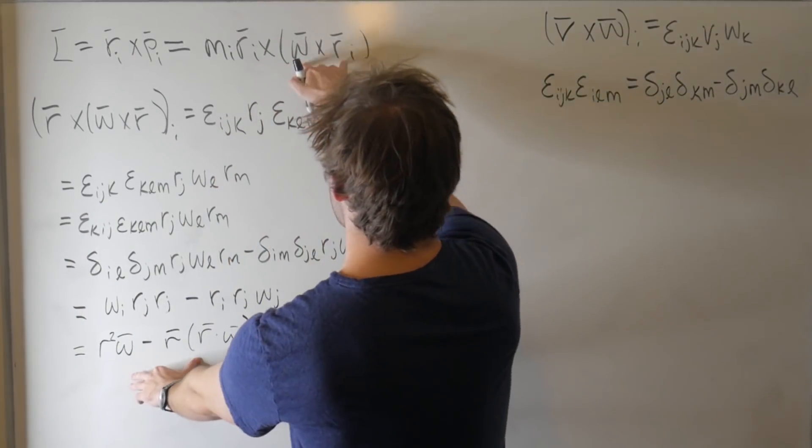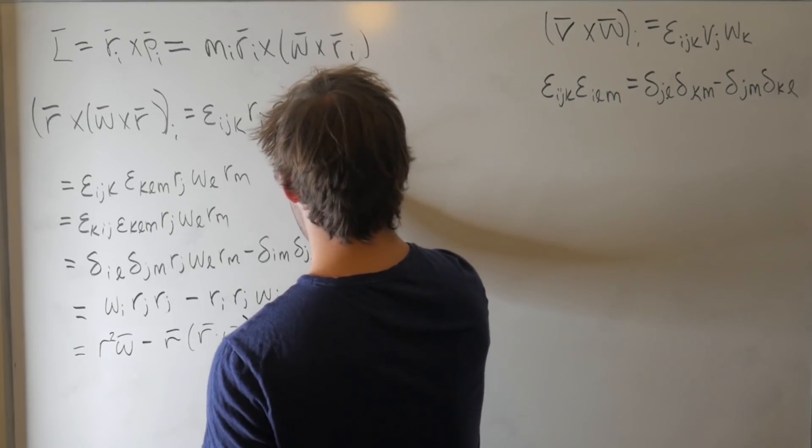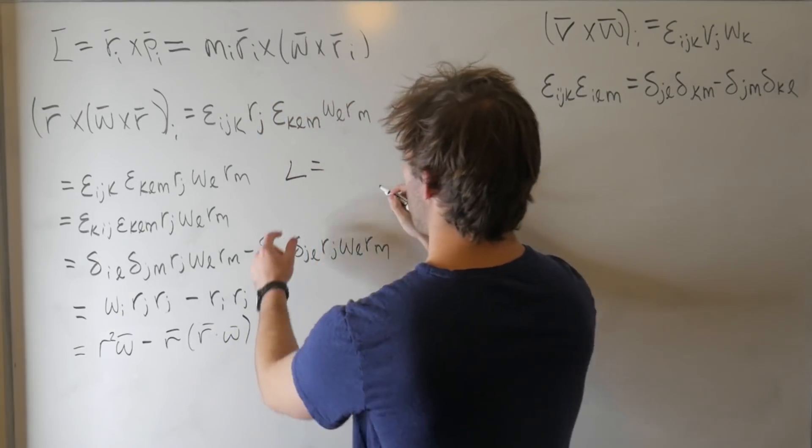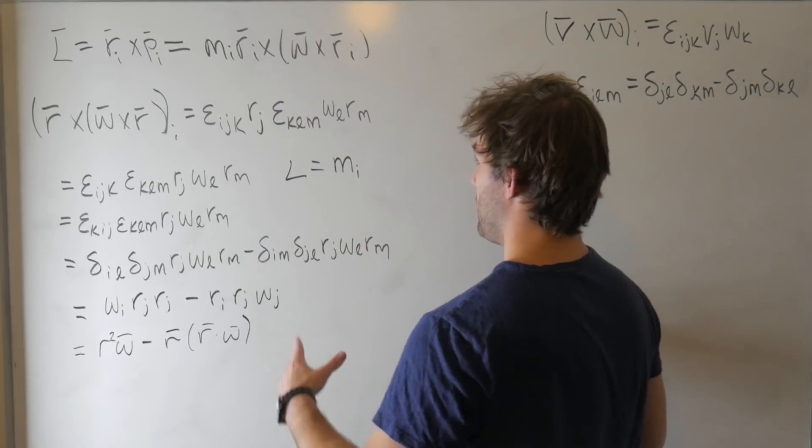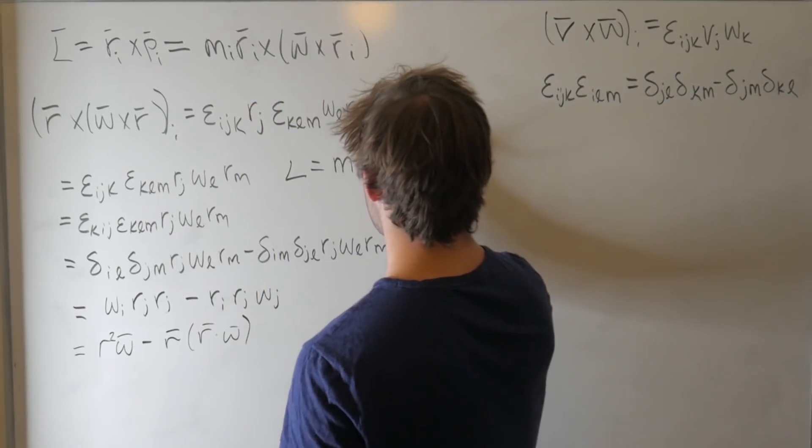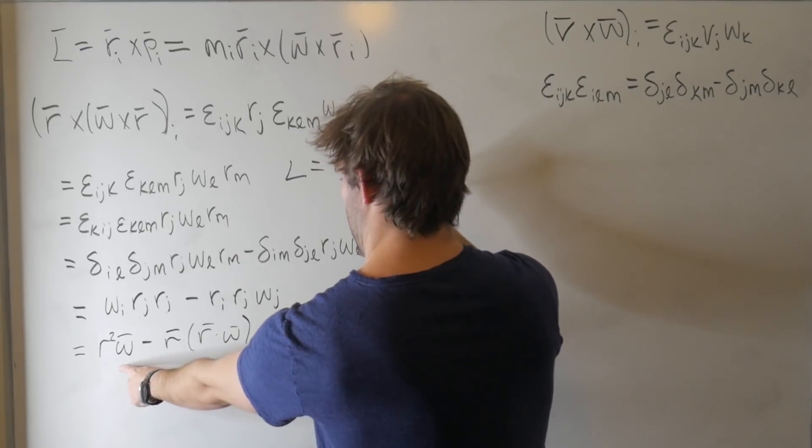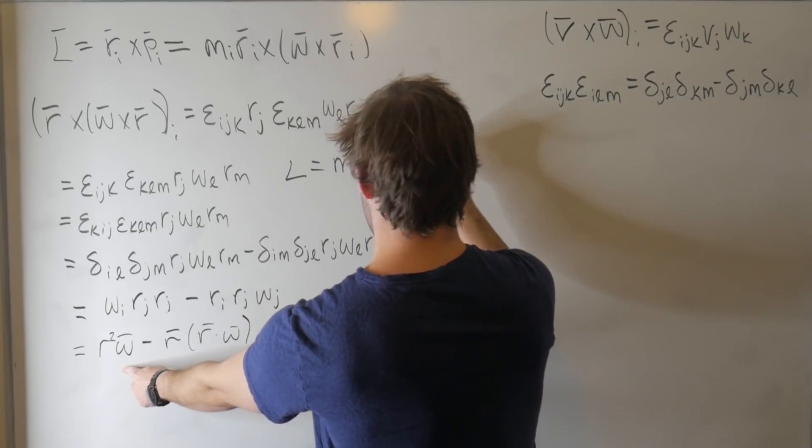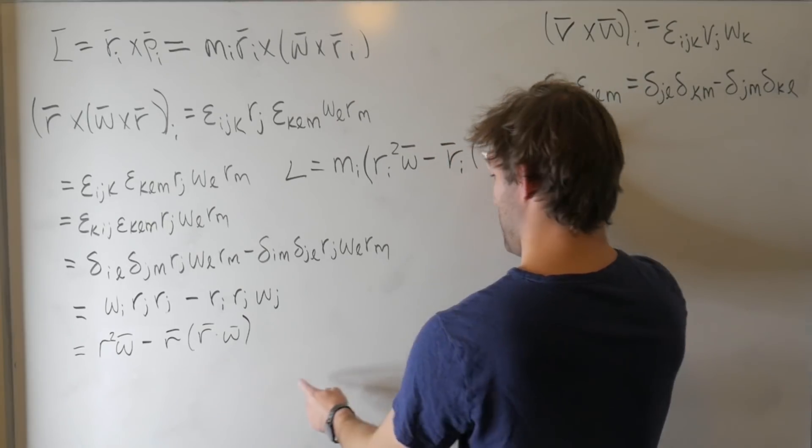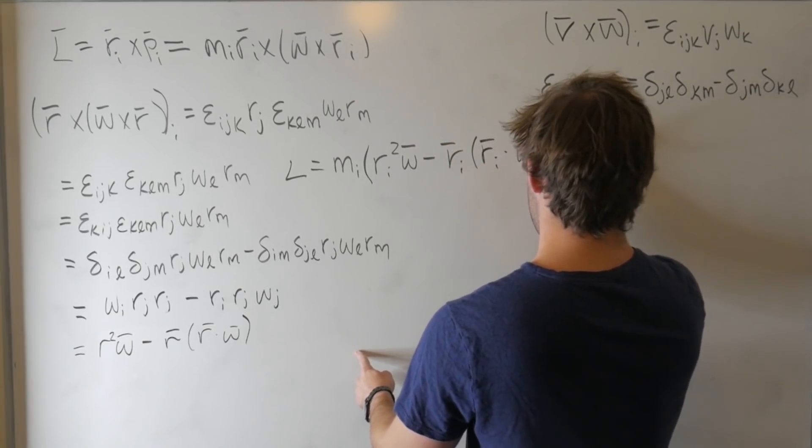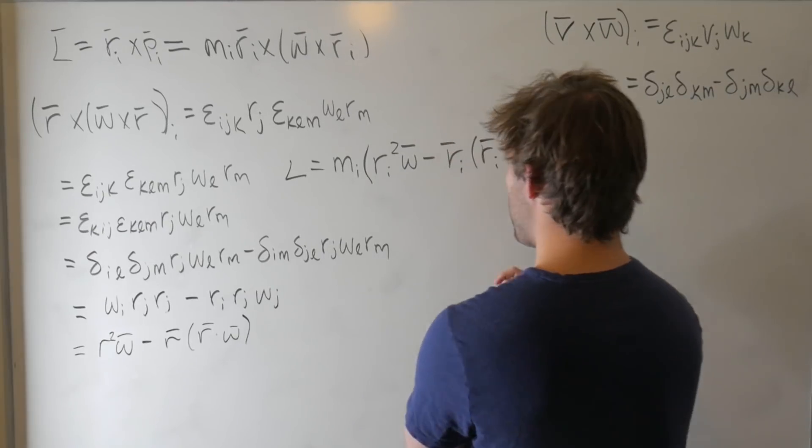So let's go ahead and substitute this back in here. And we get that L is equal to sum of m_i times r_i squared omega minus r_i times r_i dot omega. Perfect. We're getting there.